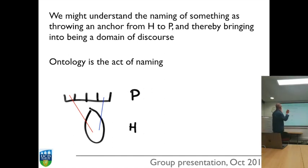We can understand the naming of something, as it were, as throwing an anchor from H to P, and thereby bringing into being a domain of discourse. So on this view, ontology is the act of naming. This, to me, is exciting. I don't like to think of ontologies as being like dictionaries, you know, get on the shelf and you go, I wonder what entities there are in the universe. And you look them up.